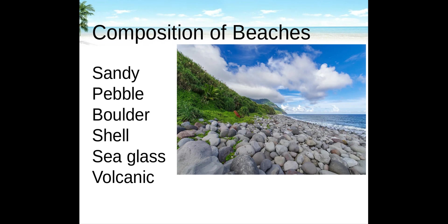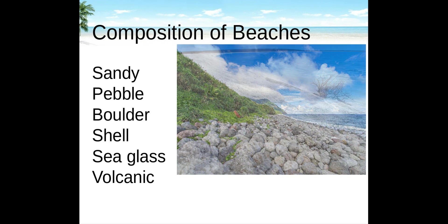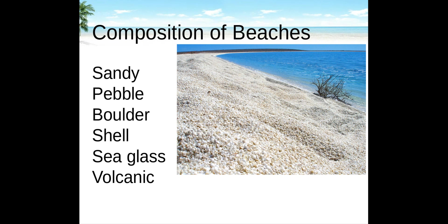Boulder beaches are so named because of the boulders that cover their shorelines, ranging in size from tiny pebbles to house-sized boulders. Shell beaches are almost entirely made of shells — mainly from dead mollusks deposited on shore by waves. The shell layer can be dozens of feet in depth. Only two true shell beaches exist: Australia's Shell Beach and Sanibel Shell Beach in the United States.